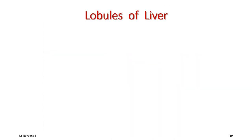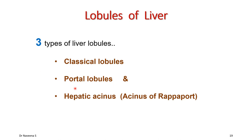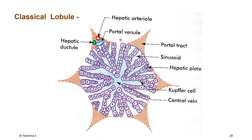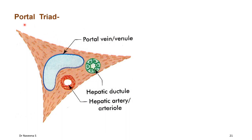Trabeculae divide the liver parenchyma into lobules, which can be classified into three types: classical lobules, portal lobules, and hepatic acinus or acinus of Rappaport. The classical lobule is defined as a portion of liver parenchyma surrounded by fibrous tissue, centered by a central vein, with radiating hepatocytes separated by sinusoids. It is hexagonal in shape with six angles. At each angle, three structures pass through the fibrous tissue: a portal venule, a hepatic arteriole, and a hepatic ductule — together known as the portal triad.